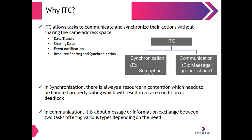What is ITC? ITC allows tasks to communicate and synchronize their actions without sharing the same address space. ITC mechanisms include synchronization examples such as semaphores, and communication examples such as message queues and shared memory. The categories are: data transfer, sharing data, event notification, resource sharing and synchronization. In synchronization, there is always a resource in contention which needs to be handled properly, failing which will result in a race condition or deadlock. In communication, it is about message or information exchange between two tasks offering various types of dependency depending on the need.